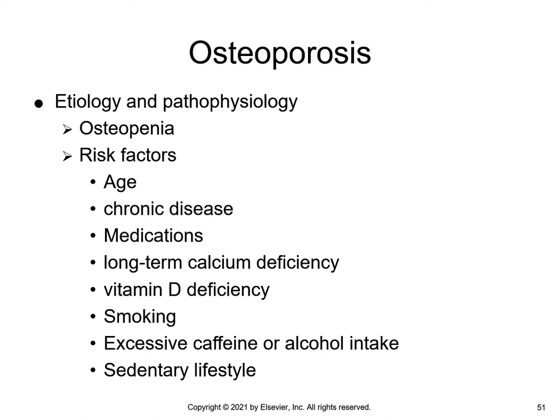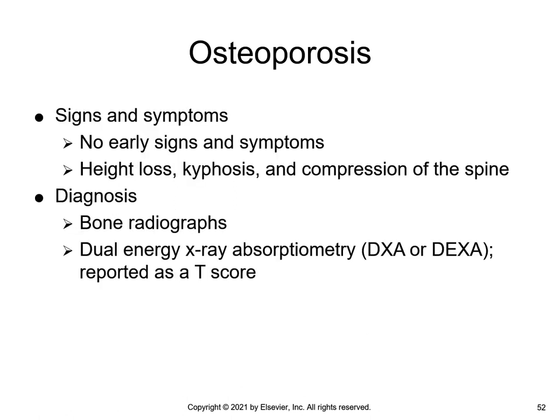Osteoporosis is when bone starts to become porous due to decreased calcium and vitamin D3. Age and heredity also play parts in osteoporosis, and it is more frequent in women. When diagnosing, radiographs of the patient with osteoporosis will appear more porous. The DXA is used to assess bone density or loss of bone; it is reported as a T-score. Normal bone density is a T-score greater than one standard deviation from a healthy adult. For osteoporosis, the T-score is 2.5 to 3.0 standard deviations below a healthy young adult.